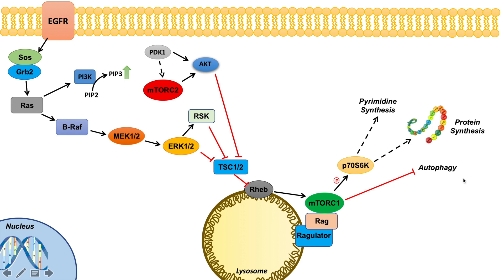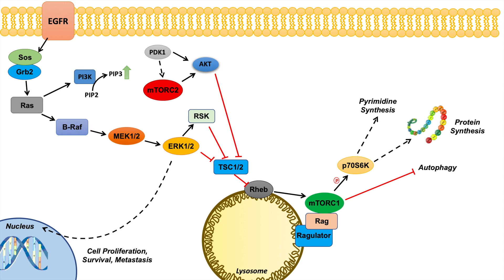The RAS-RAF-MEK-ERK pathway can also lead to several other effects independent of the mTOR complex pathway. ERK itself can enter the nucleus and lead to the activation of genes responsible for cell proliferation, survival, and metastasis. Please check out the RAS-RAF-MEK-ERK pathway video for more details.